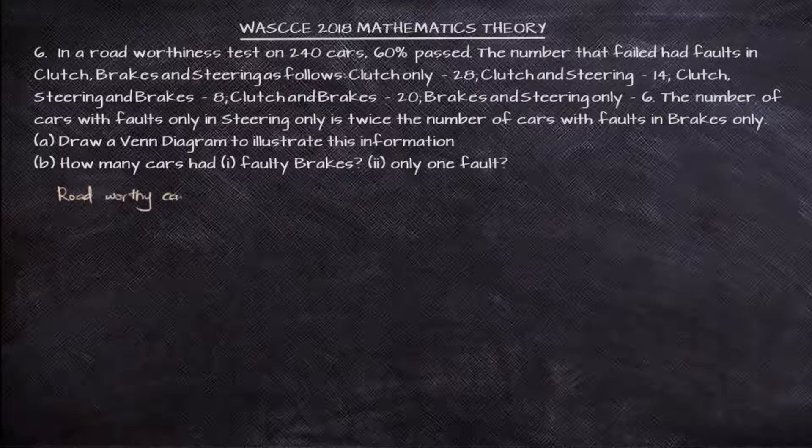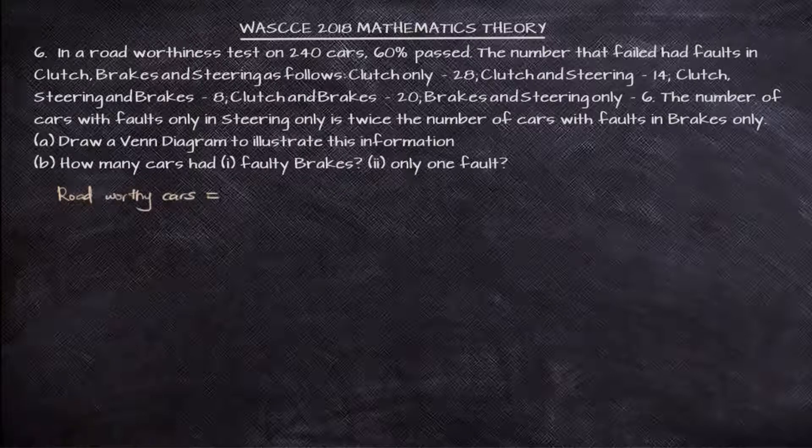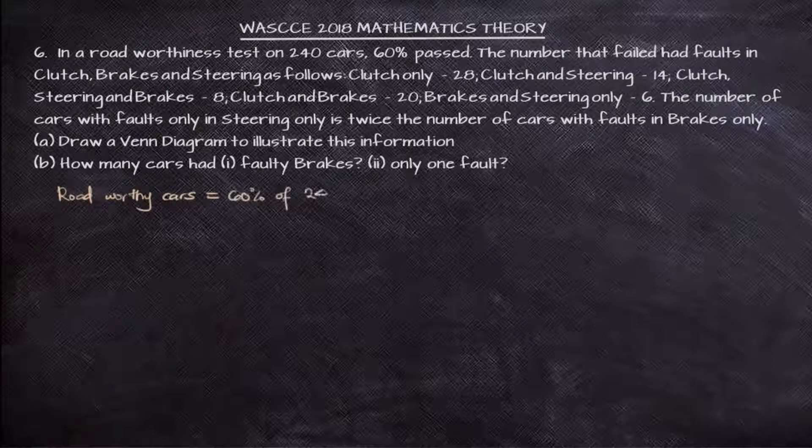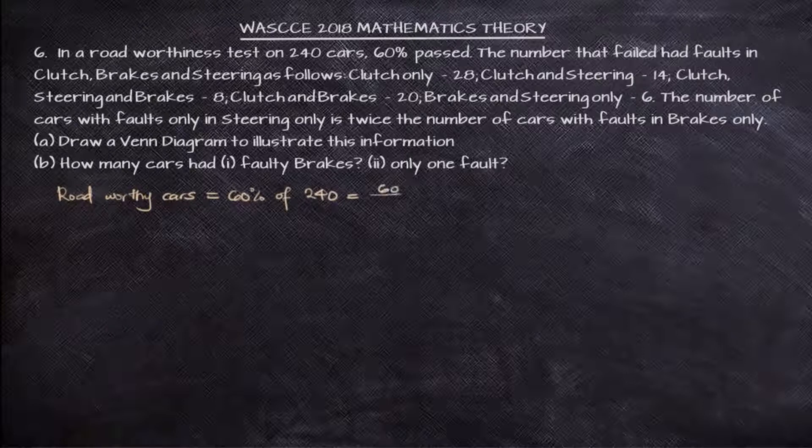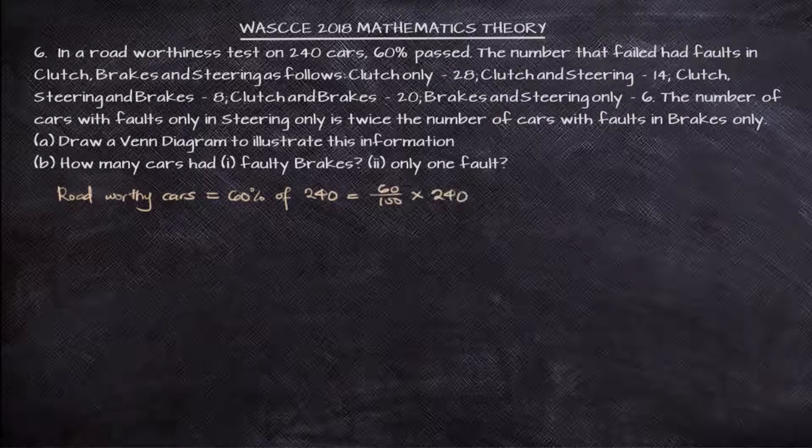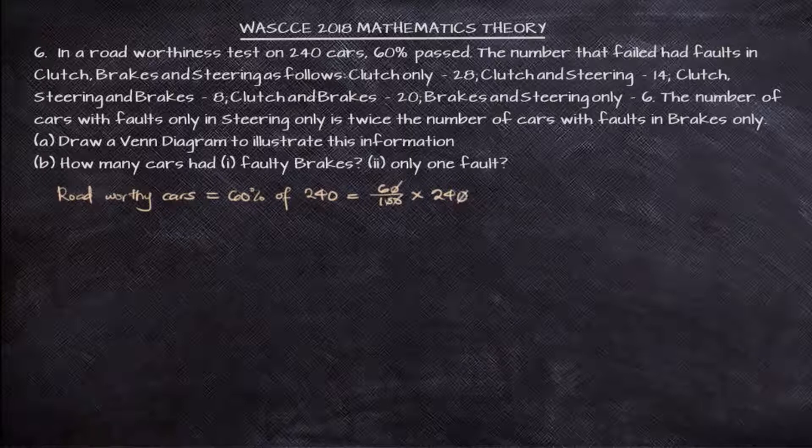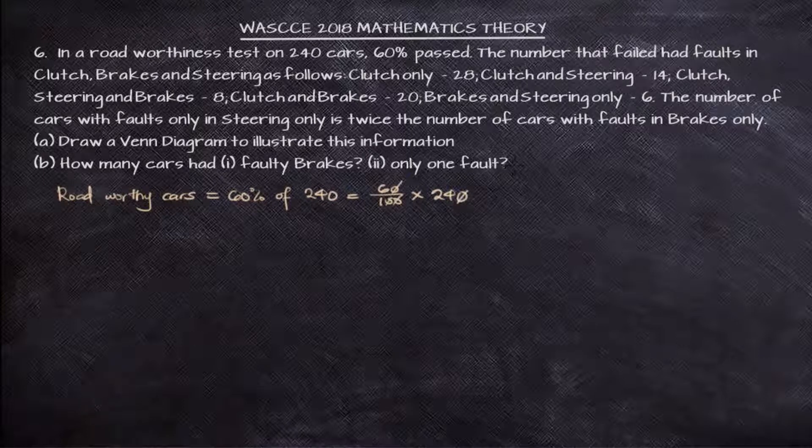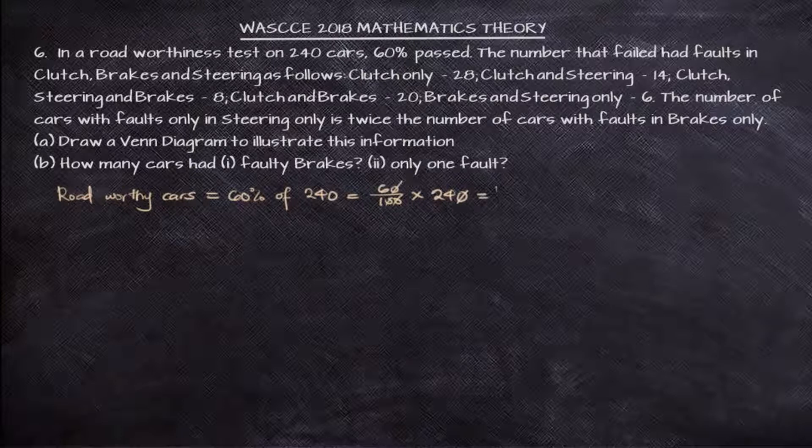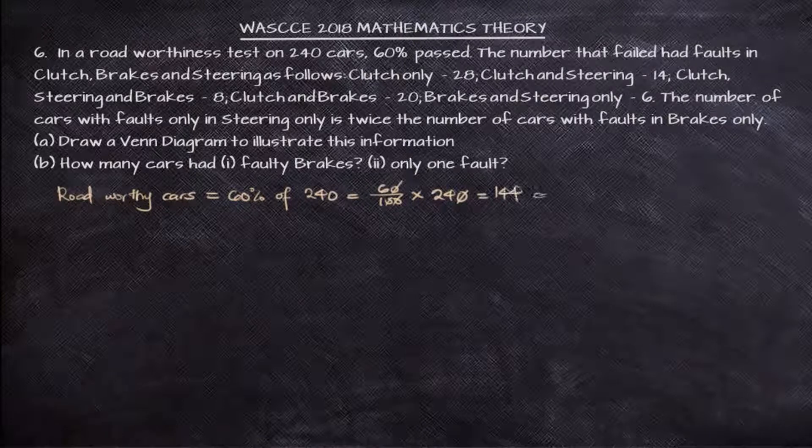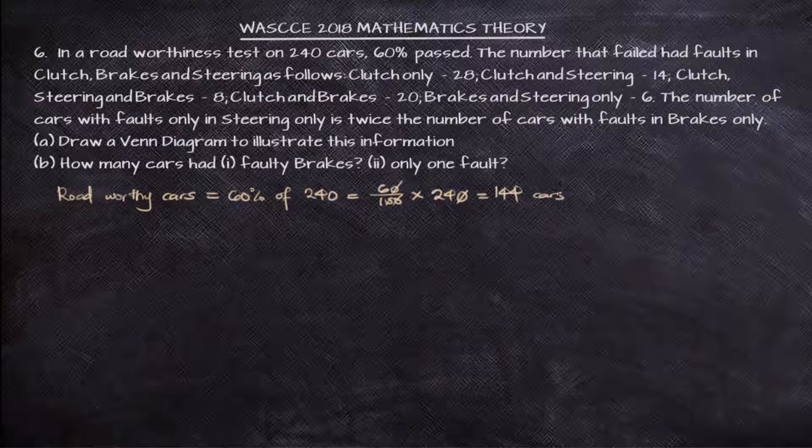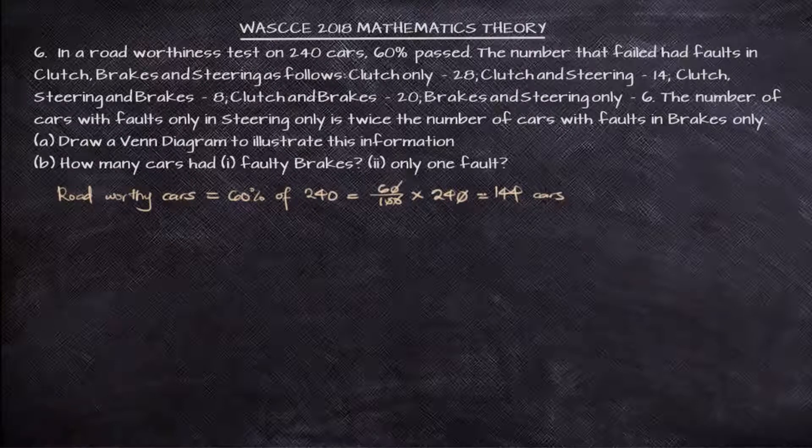Now from the information we are given, the roadworthy cars will be 60% of 240 cars. And if you have to calculate that, that will be 60 over 100 times 240. The zeros will cancel out such that we have this to be a total of 144 cars. So 144 cars are roadworthy. They don't have any faults. So they are good to go.